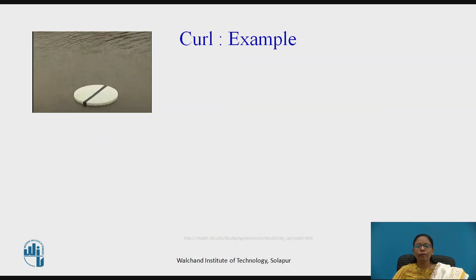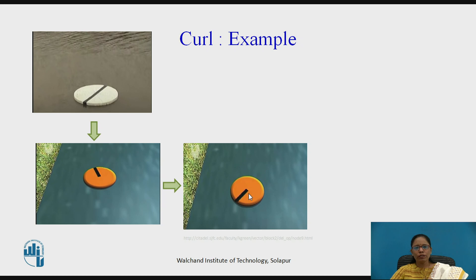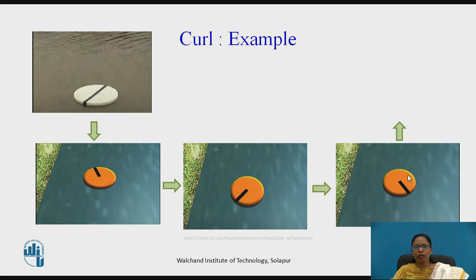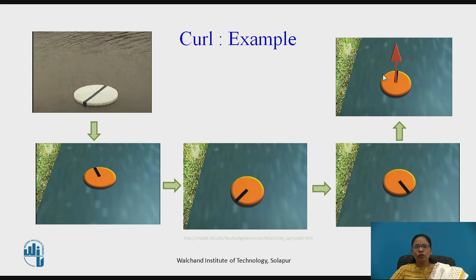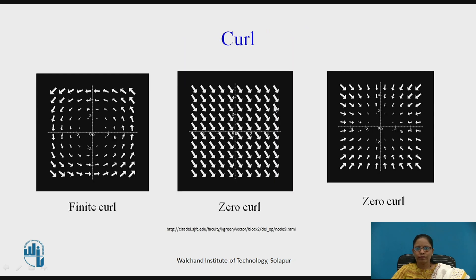To further illustrate: imagine a disk placed in water with a mark on it. As water flows, the disk rotates — moving in an anti-clockwise direction at successive positions. Anti-clockwise rotation indicates the upward direction, which is the direction of curl. The curl direction is given by the right-hand thumb rule: curl your fingers in the direction of rotation and the thumb points in the direction of curl.